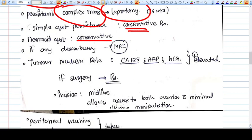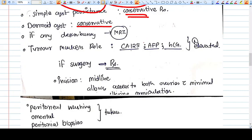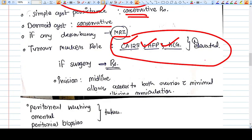The role of tumor markers which is very important in ovarian cancer, like CA-125, AFP, HCG, is not very much applicable here in pregnancy because they are naturally elevated.